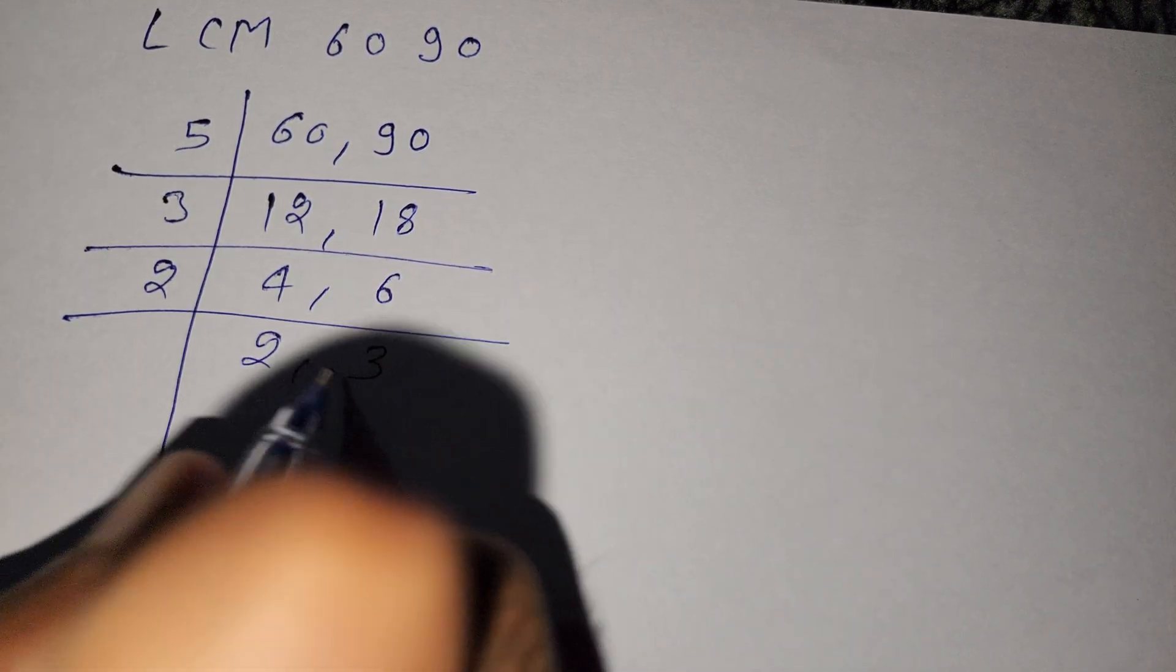3 fours are 12 and 3 sixes are 18. Now divide by 2. Here is 2 and here is 3.